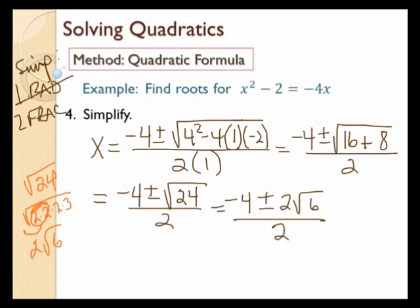Now I want to simplify the fraction. I really have two fractions here: negative 4 over 2, plus or minus 2 square root of 6 over 2. But I can combine them as one fraction since they both have the same denominator. I'm going to look for the same number I can take out of all three of these numbers. Notice the square root of 6 I've left alone — there will be a square root of 6 in my answer. I can take a 2 out of all three of the numerical coefficients.